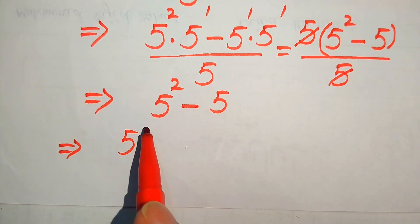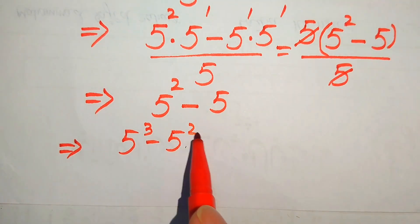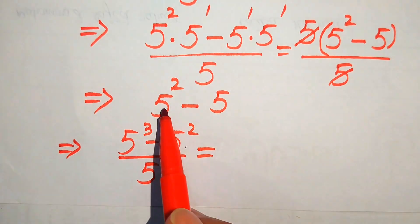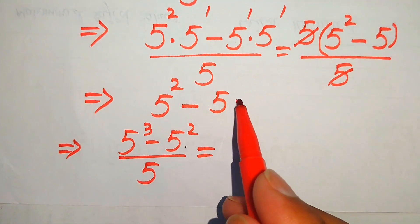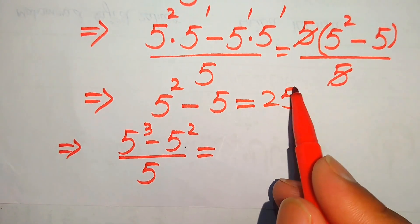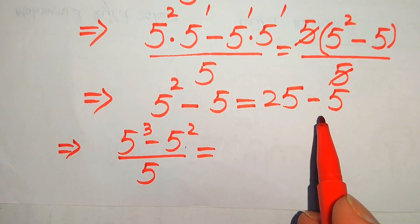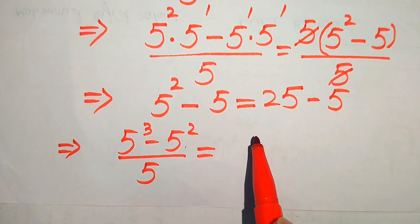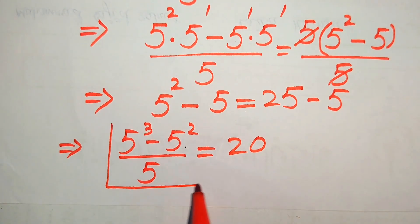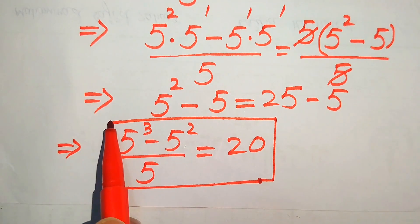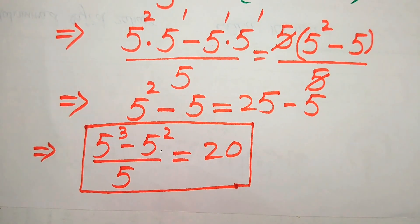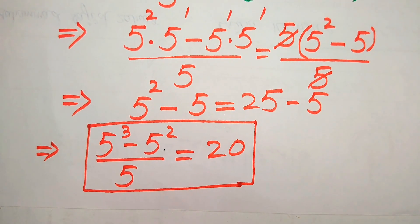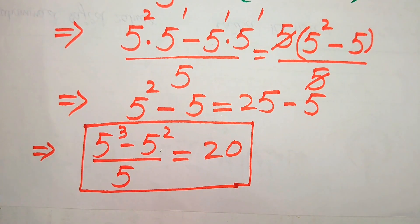We are left with 5 squared minus 5 in the numerator. In the final step, 5 squared equals 25, so 25 minus 5 equals 20. This is the final simplified form from the second method. If you have any other method, please write it in the comment section. Thank you for watching — please subscribe for more videos.